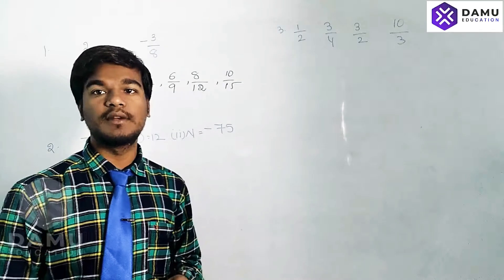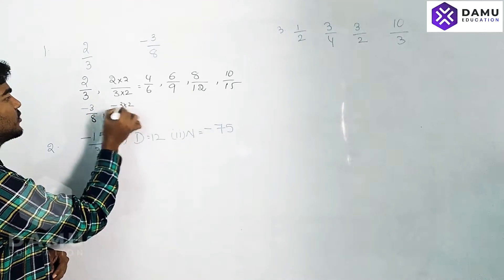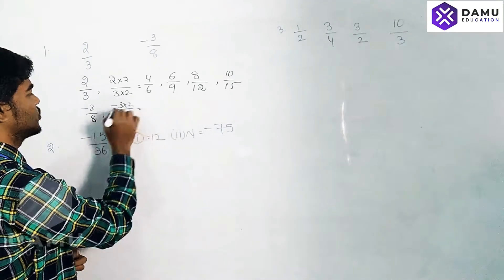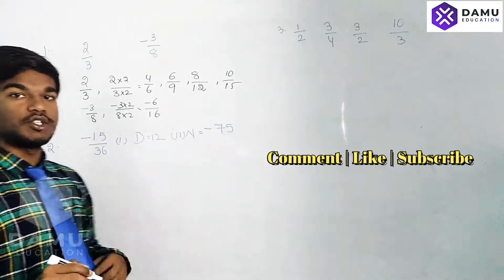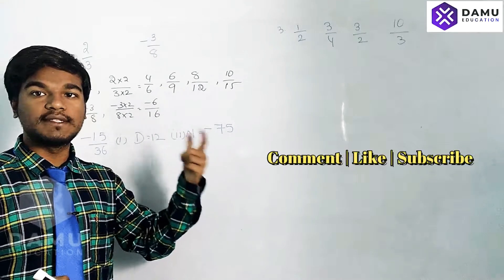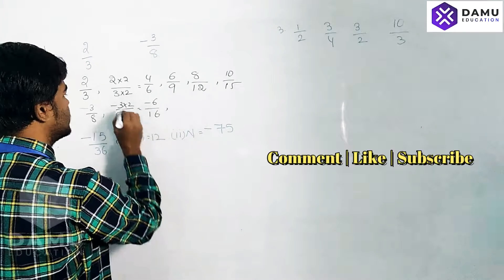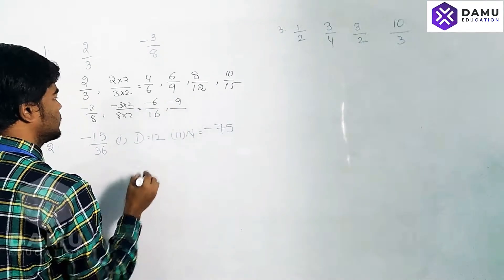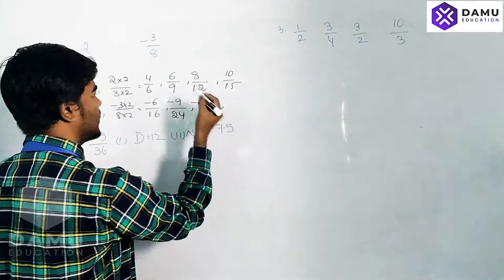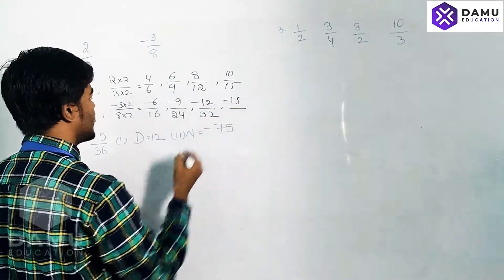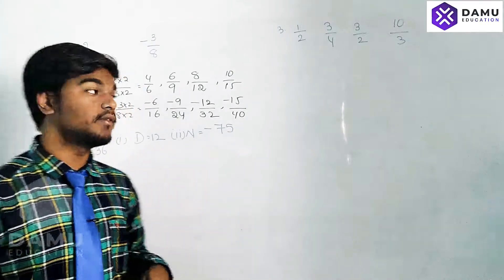Next, for -3/8: -3×2 over 8×2 gives -6/16. Then we multiply by 3 and by 4: -3×3 = -9 over 8×3 = 24, giving -9/24. Then -3×4 = -12 over 8×4 = 32, giving -12/32. And -3×5 = -15 over 8×5 = 40, giving -15/40. These are the equivalent ratios for -3/8.